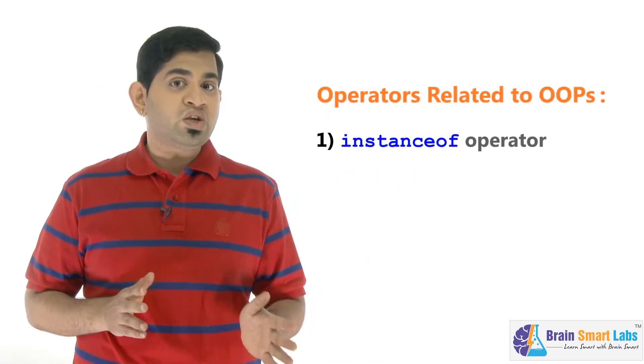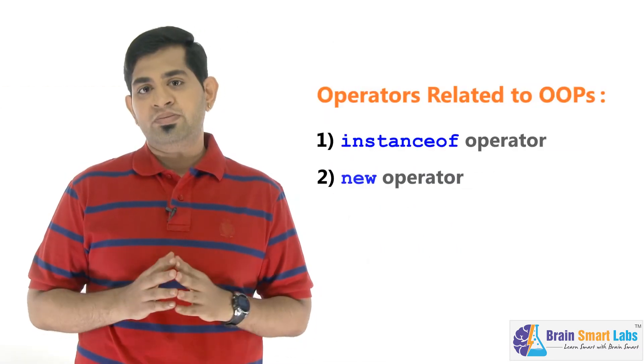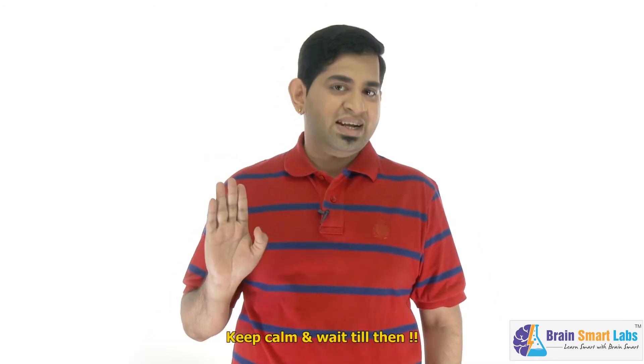In our previous topic, we had two more important operators to discuss, which were completely related to OOP — the instanceof operator and the new operator. The instanceof operator is used to obtain runtime information of an object, and the new keyword helps us create a new object every single time we use it. Both instanceof and new are keywords in Java. More about them will be taught when we cover OOP.